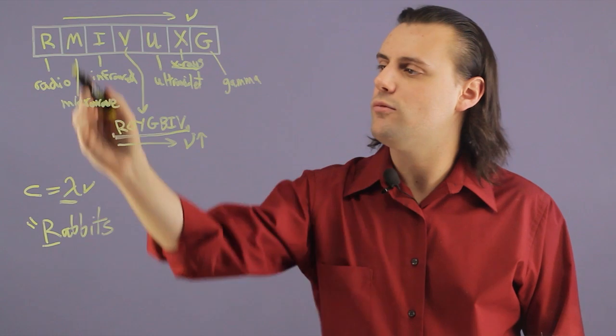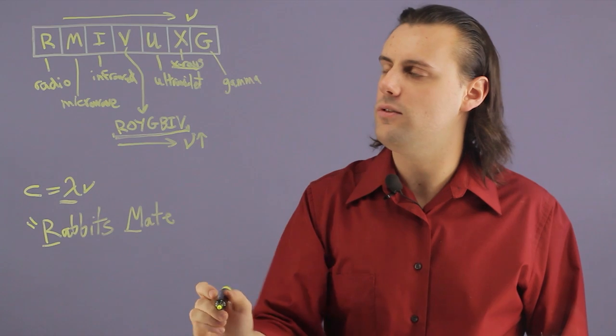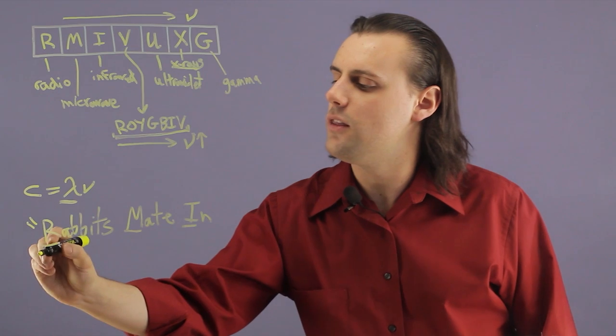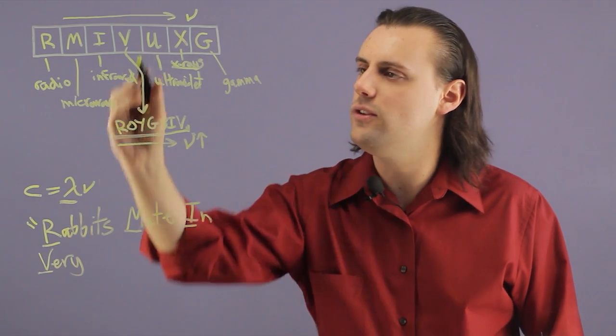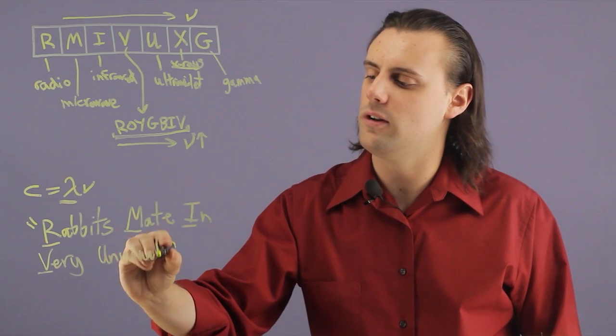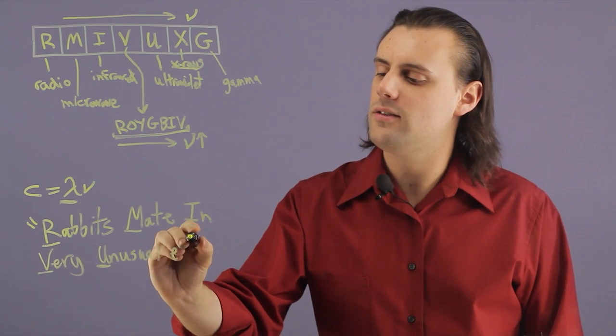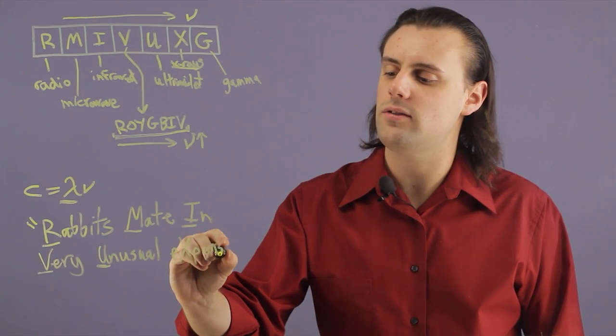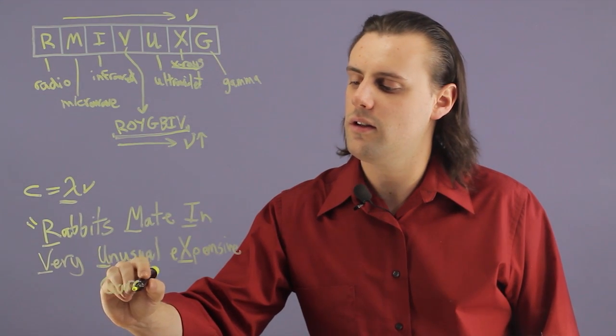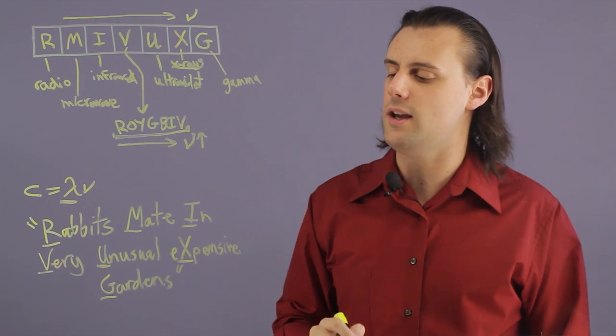So the R in rabbits would correspond to radio waves. The M in mate would correspond to microwaves. The I in the word in would correspond to infrared. The V in very would correspond to the visible portion. The U in unusual would correspond to the ultraviolet radiation. And then the X in expensive would correspond to the X-rays. And finally the G in gardens would correspond to the most energetic type of electromagnetic radiation, the gamma rays.